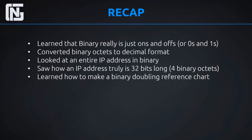We also learned how to make a binary doubling reference chart. Starting from right going to left: 1, 2, 4, 8, 16, 32, 64, 128 — and that can go further: 256, 512, 1024, 2048, 4096, 8192, 16,384, 32,768, 65,535. You'll get good at this, and you'll see these numbers all over IT when we get into networking. It's the only thing you need to write down, and you can do all your IP addressing and subnetting from it — the binary doubling reference chart.